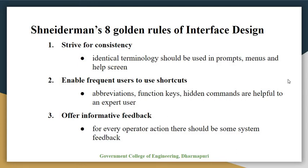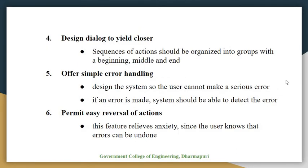The fourth golden rule is to design dialogue to yield closure. Sequences of actions should be organized into groups with a beginning, a middle, and an end. The informative feedback at the completion of a group of actions gives operators a sense of accomplishment, relief, and an indication that they are clear to prepare for the next group of actions.